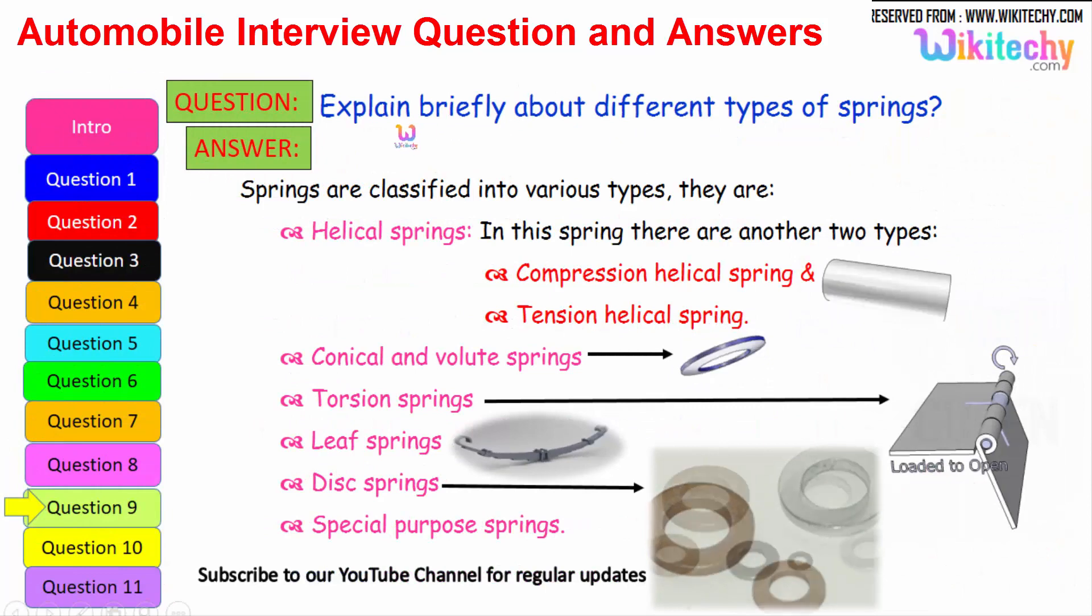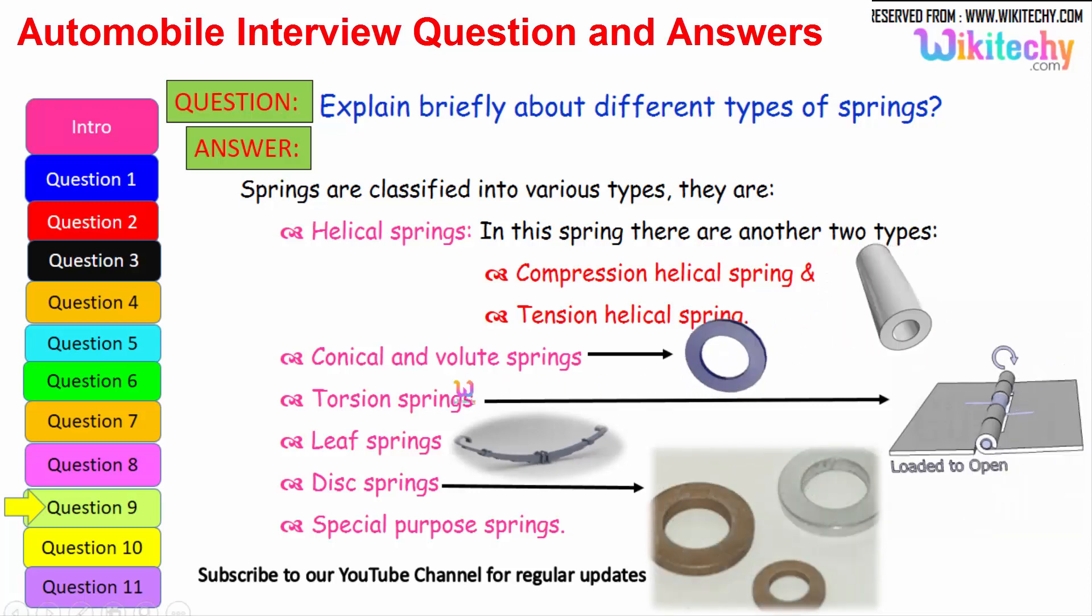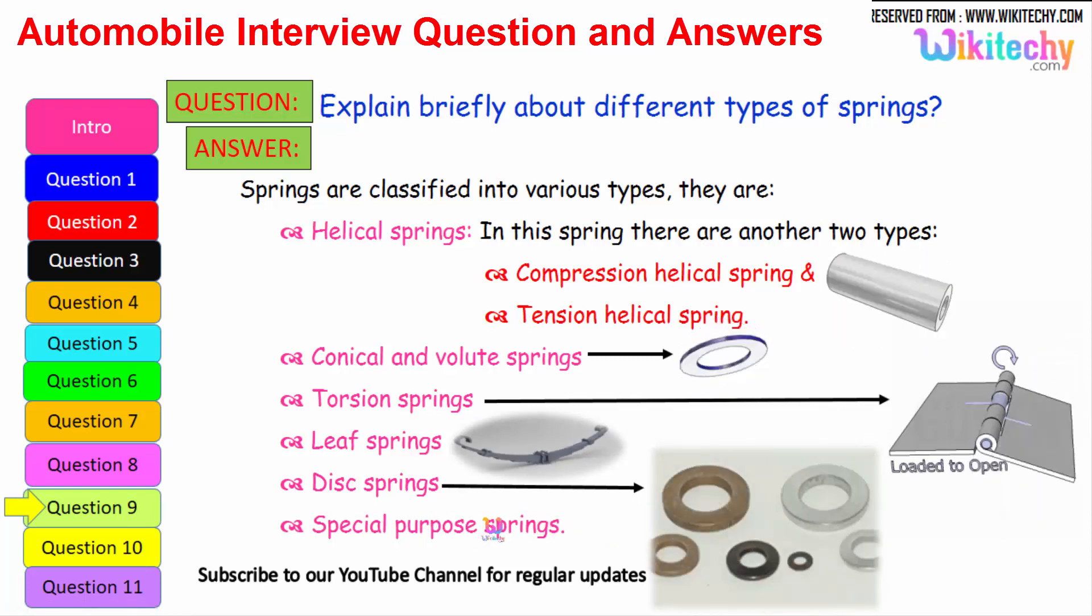Now let us see briefly about the different types of springs. Springs are classified into various types. The first one is helical springs. In the springs there are two types further: one is compression helical spring and the other one is tension helical spring. And the next one is conical volute springs. The other one is torsion springs. Here is the leaf springs. Here is the disk springs. And there are some additional springs which are called special purpose springs. These are different types of springs available.